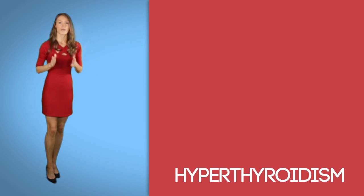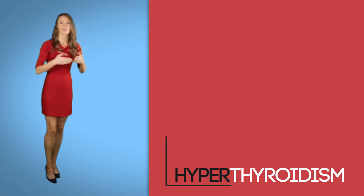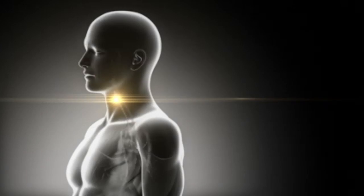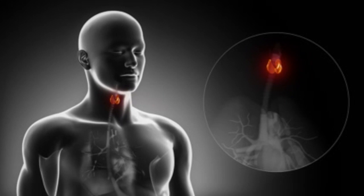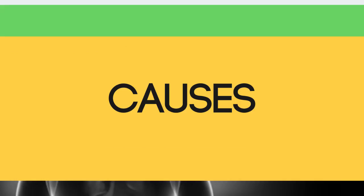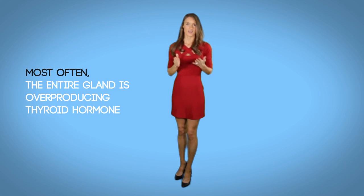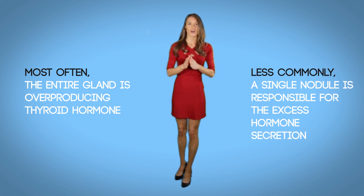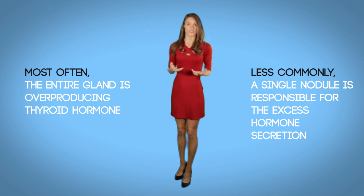Hyperthyroidism — remember, whenever you see the letters 'hyper' in front of a word, it means too much. Hyperthyroidism is when the thyroid gland is producing too much thyroid hormone. There are several causes: most often the entire gland is overproducing thyroid hormone; less commonly, a single nodule is responsible for the excess hormone secretion.